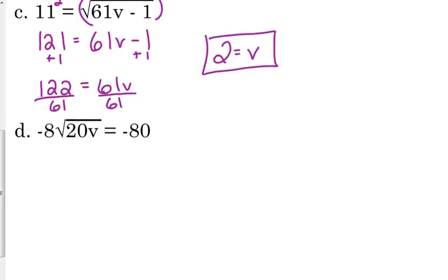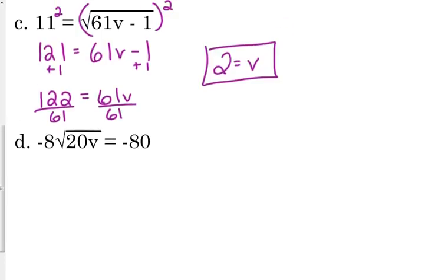Okay. Now, most of the time, though, we don't just have a plain square root. Usually, there's something in front of it or behind it or whatever. We don't have just a plain square root. So, you have to isolate the square root first before you square both sides. So, here we've got to divide both sides by negative 8. So, we've got the square root of 20v is equal to positive 10.